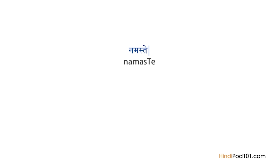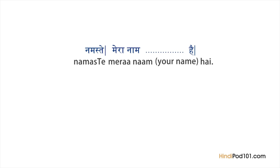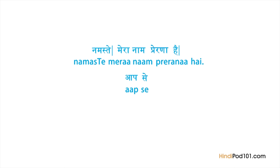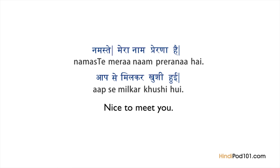There are only two sentences you need to know. Start by saying Namaste. Then say Mera naam, your name, and then Hai. Namaste. Mera naam Prerna hai. Finally, say Aap se mil kar khushi hui. Together: Namaste. Mera naam Prerna hai. Aap se mil kar khushi hui.